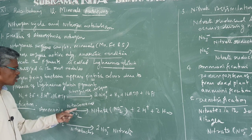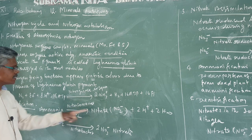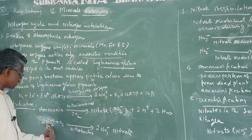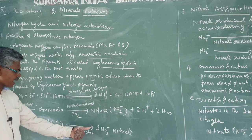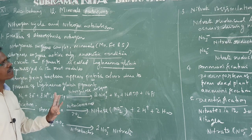With Nitrosomonas active, ammonia is converted into nitrite. Again, nitrite is converted into nitrate with the help of Nitrobacter.